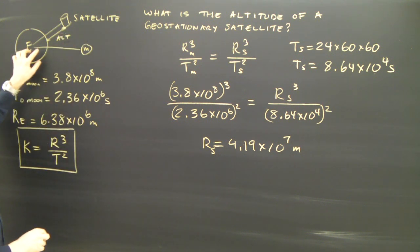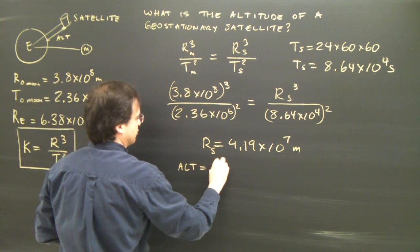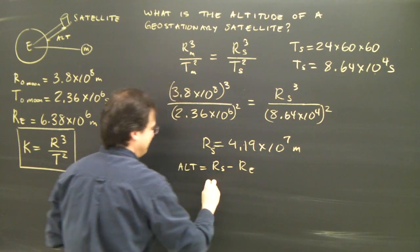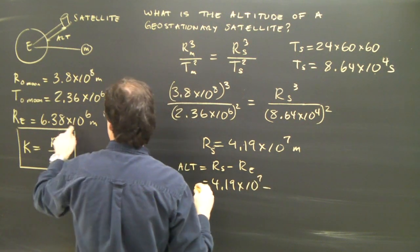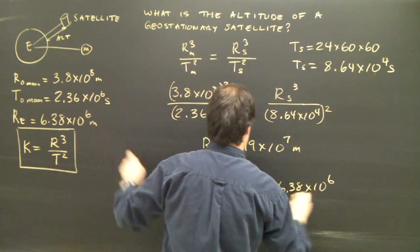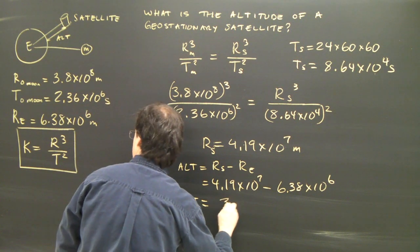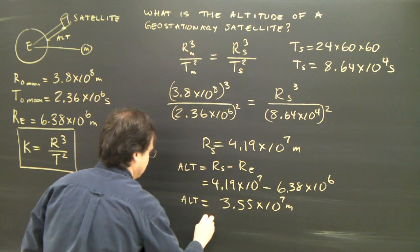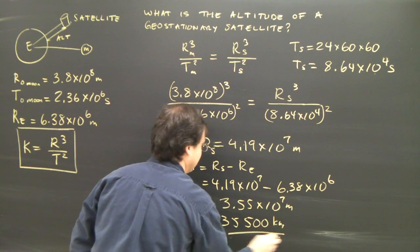To find the altitude, I must subtract the radius of the Earth. So the altitude equals the radius of the satellite minus the radius of the Earth. So it's 4.19 times 10 to the 7 minus 6.38 times 10 to the 6. The altitude is 3.55 times 10 to the 7 meters, which is 35,500 kilometers. Give you an idea of how big it is.